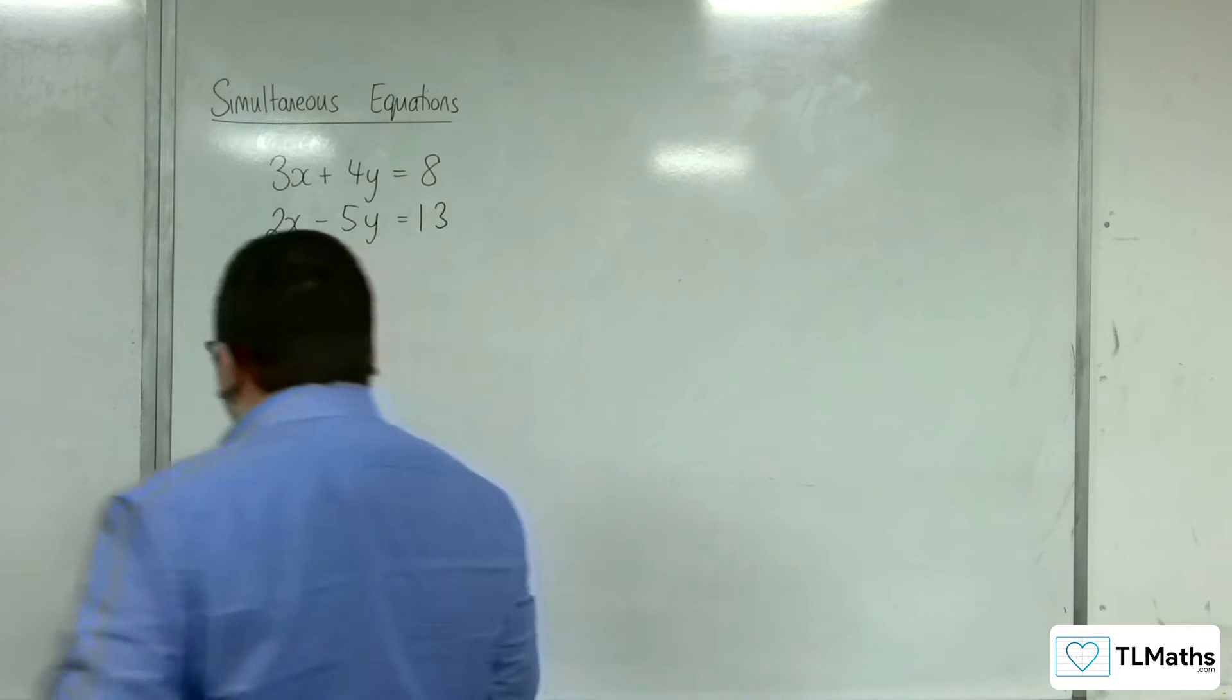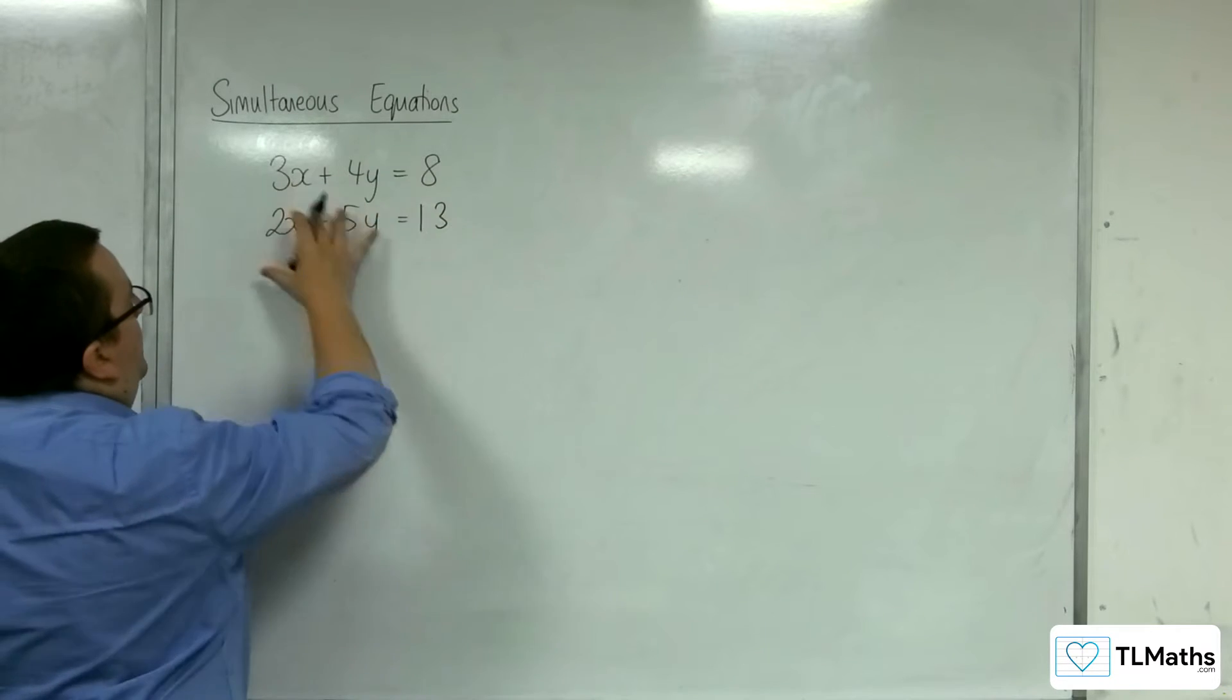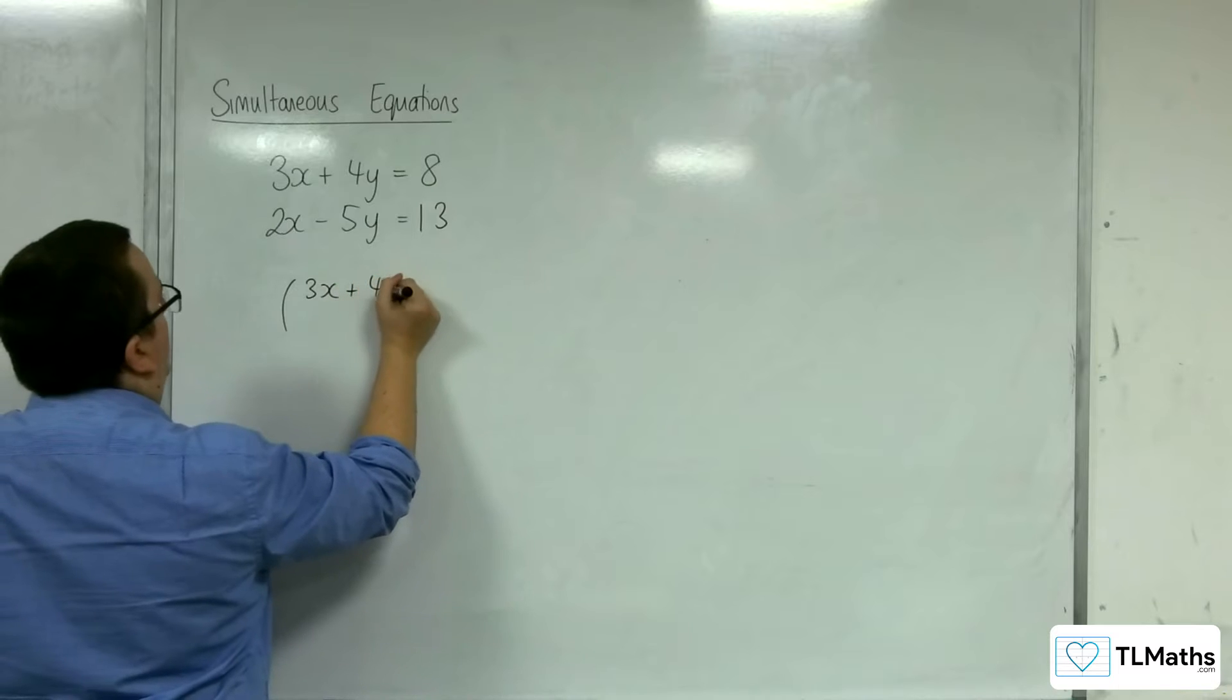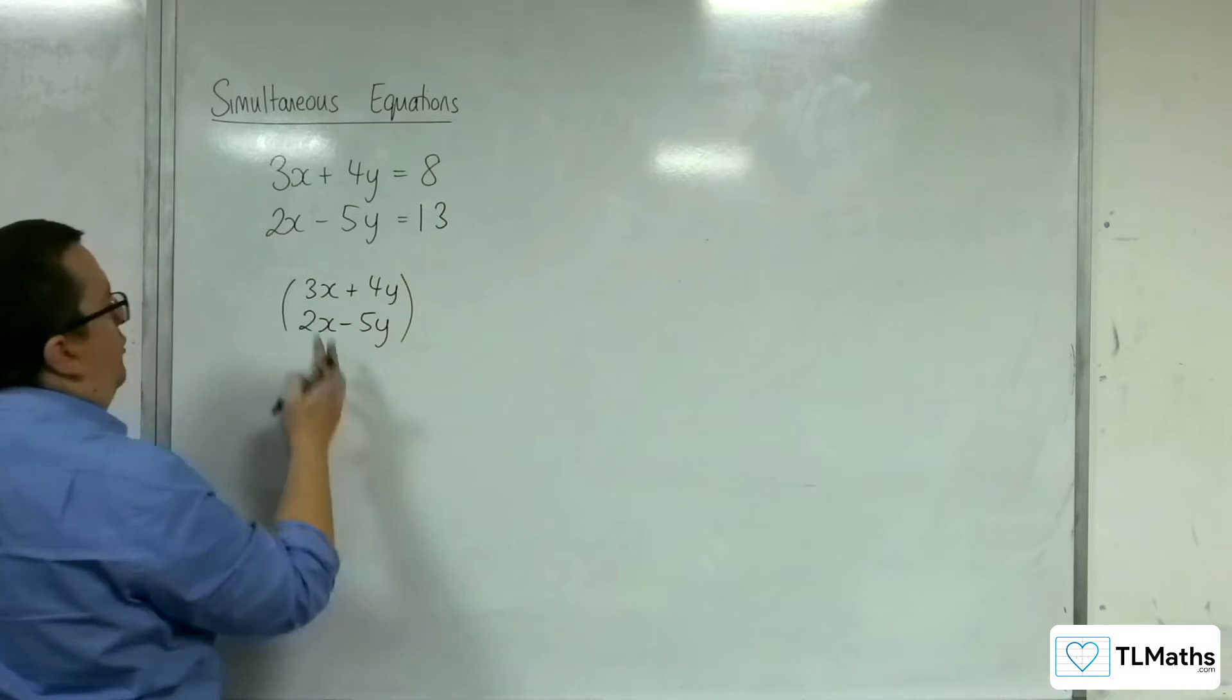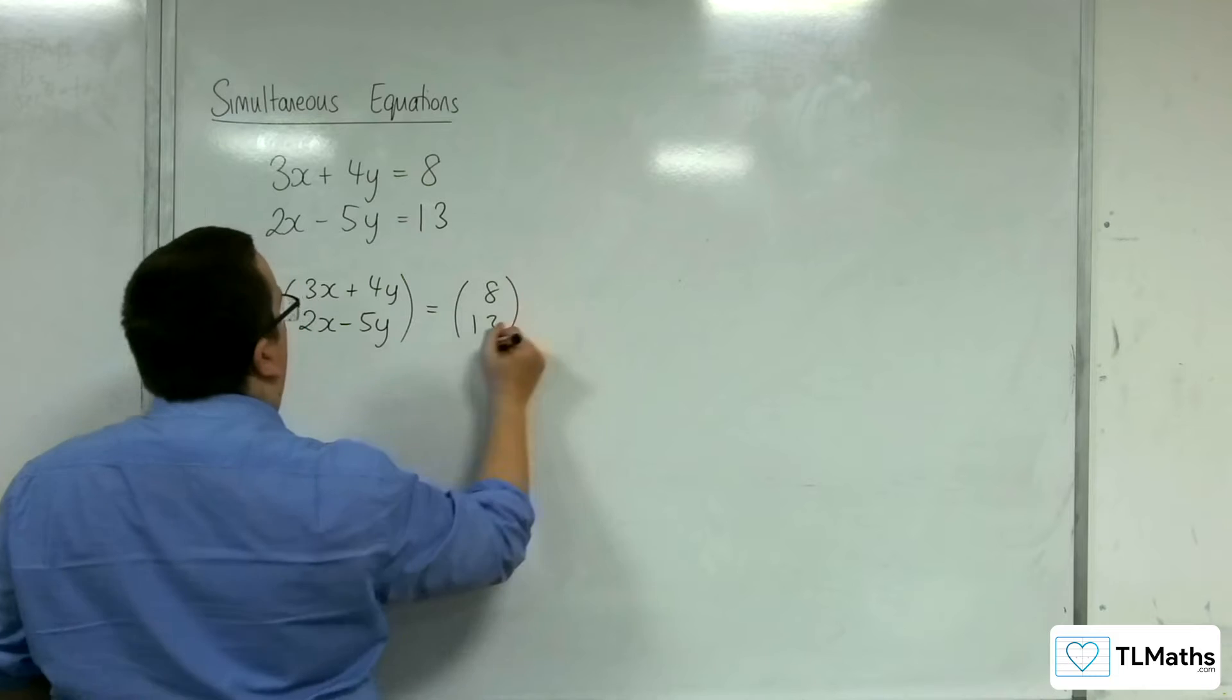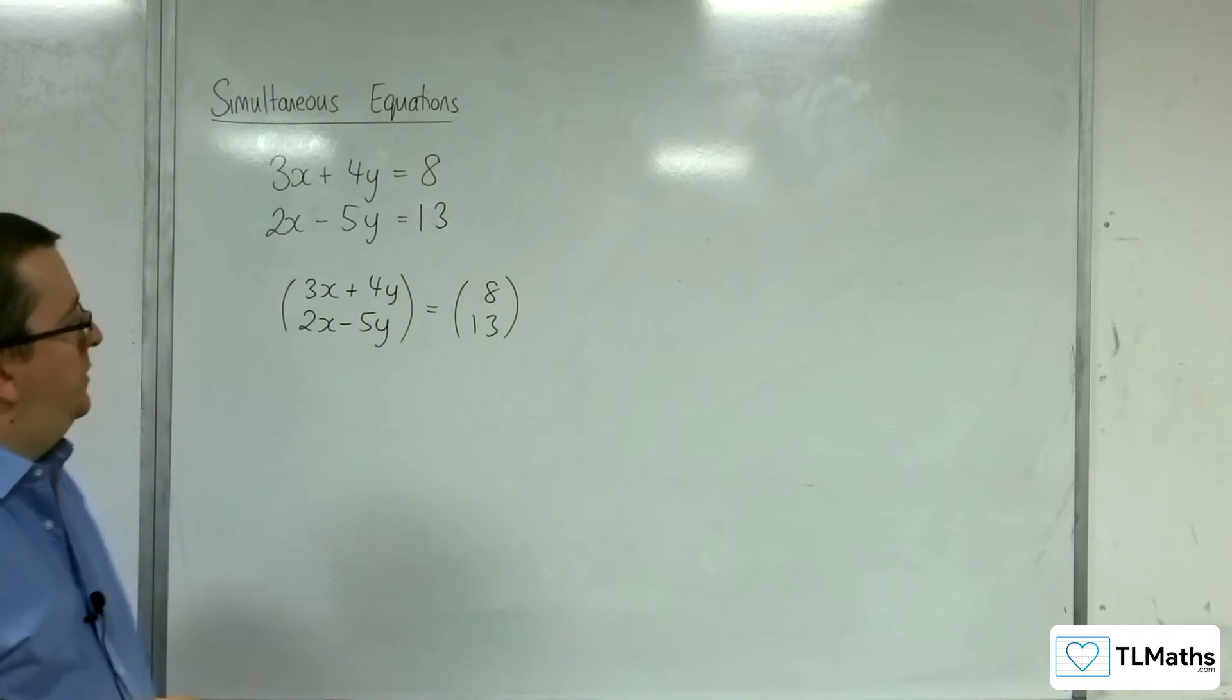So the first thing to understand is that I'm able to write this set of equations as the left-hand side being a matrix. So 3x plus 4y and 2x minus 5y. So a matrix with two rows and one column and the right-hand side being 8, 13. So you've got this top row, which is one of the equations, and the bottom row is another of the equations.